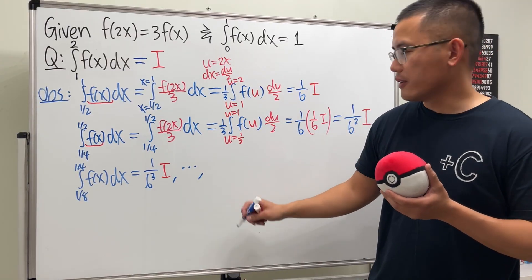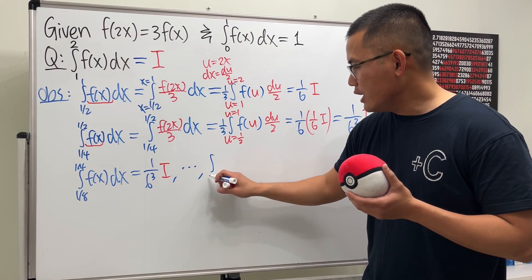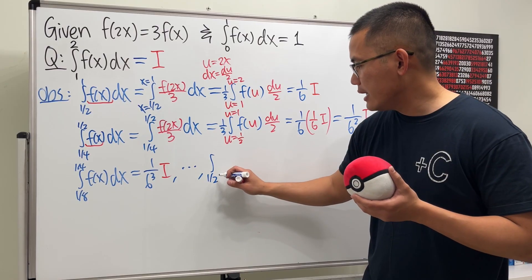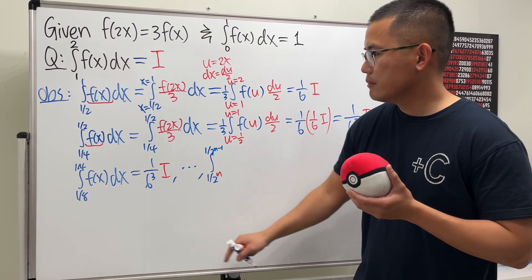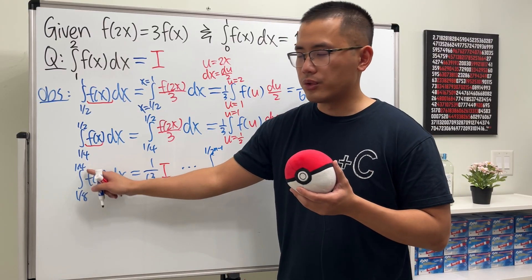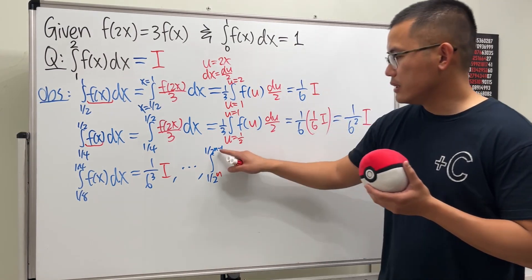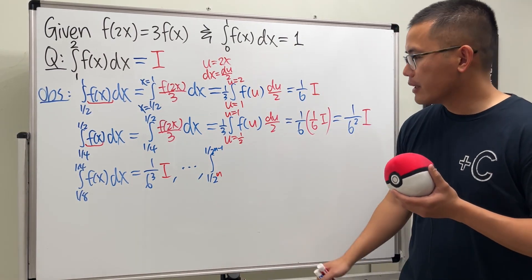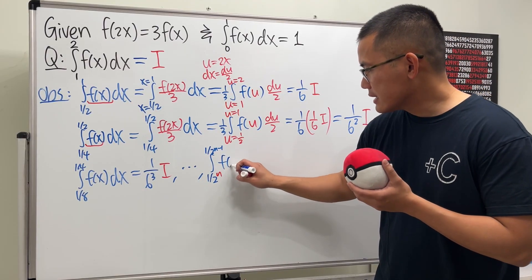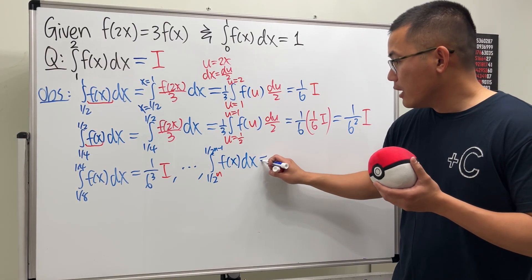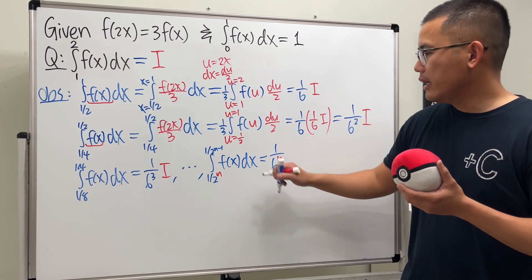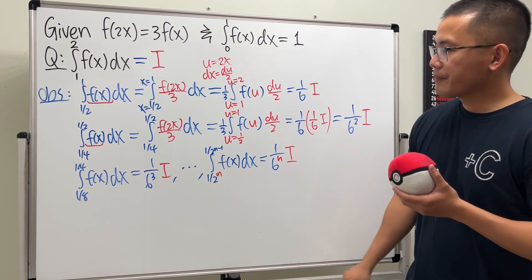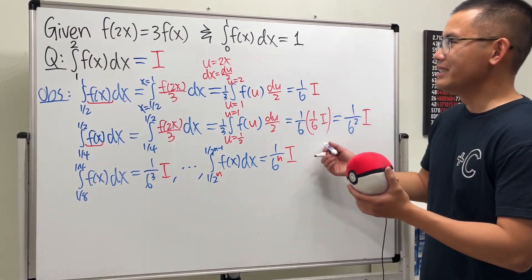So, the next one that we will do is just the integral going from 1 over 8 to 1 over 4 of the function f of x dx. And we will get 1 over 6 to the third power here, and then, multiply that by i. And then, so on, so on, so on. And in general, we can write down the following. The integral going from 1 over 2 to the n to 1 over 2 to the n minus 1, because this right here is just like 2 to the 2, this is 2 to the third. So, this right here has one less factor of 2. And then, the function f of x dx. This right here is just going to be 1 over 6 to the nth power, and then, multiply that by i.